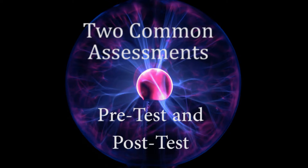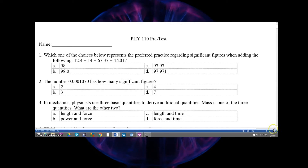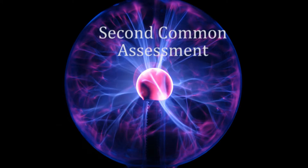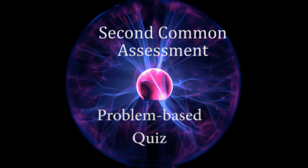The student test, instructor answer key, and Excel sheet for recording the scores may be found on the right hand side of the MyPeak page under the common assessment heading. The second common assessment will be a problem-based quiz on velocity and force. The quiz may also be found on the right hand side of the MyPeak page under the common assessment heading.